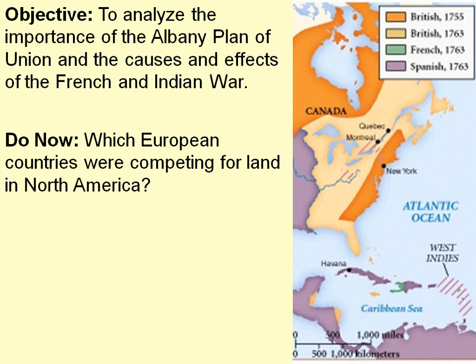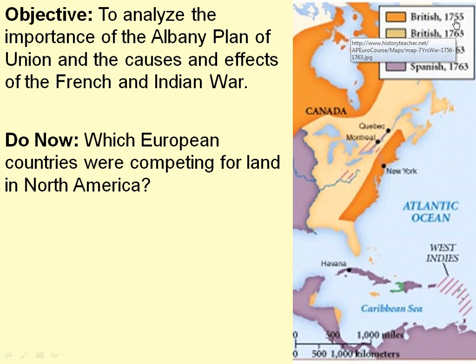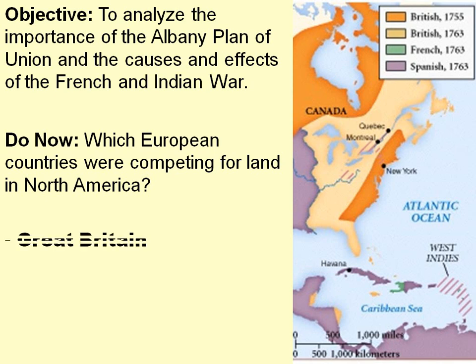Which European countries were competing for land in North America? In orange is British territory prior to 1755. Yellow is British after 1763. Green is French after 1763, and Spanish territory is in purple. This war is really the first world war if you want to look at it that way — it's happening all over the world, in places like India, Europe, and the New World. In the colonies we call it the French and Indian War, but it was between the two major powers, England and France, and others — Great Britain, France, and Spain — all competing for land in North America.